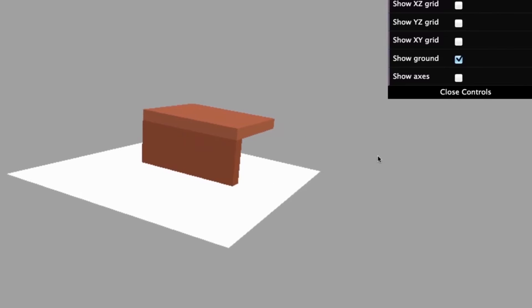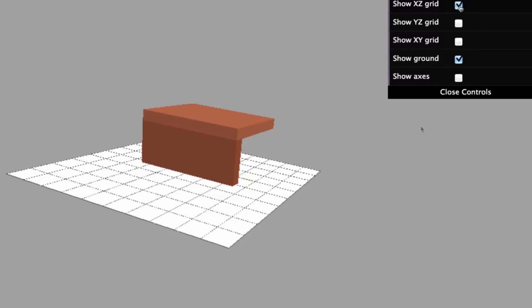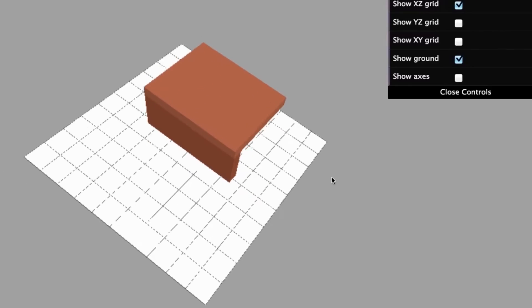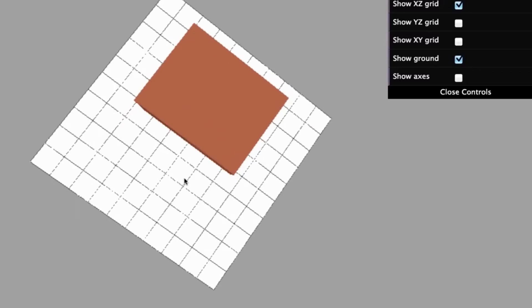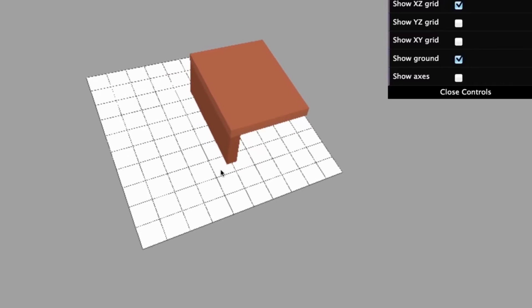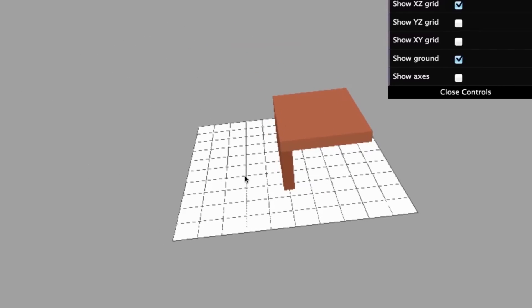You'll also notice a cool program feature. There are some controls available. The grids can help you get a sense of distance along each axis. They have lines every 100 units. Each is labeled with the axes that are in that grid plane. For example, since the y-axis is up for this scene, the XZ grid is on the ground plane.